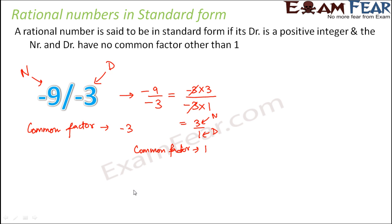Other than 1, we do not have any other common factor, so we cannot reduce it further. Minus 9 by minus 3 had a common factor of minus 3, so we reduced it to 3 by 1. But 3 by 1 has no other common factor except 1, so 3 by 1 is in its standard form — we cannot reduce it any further.